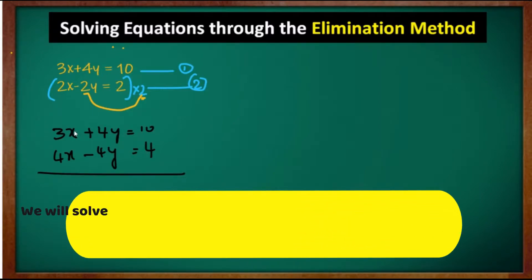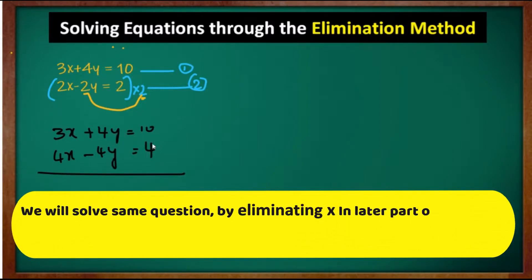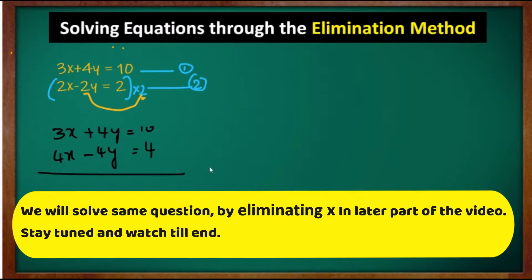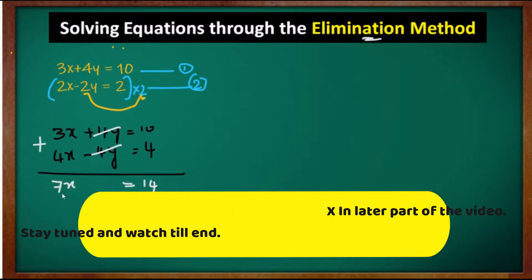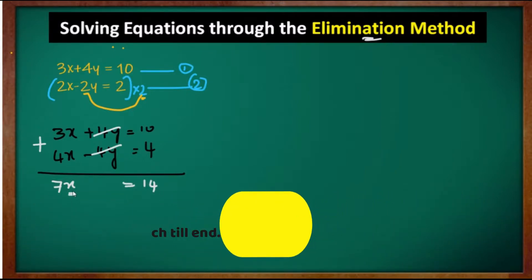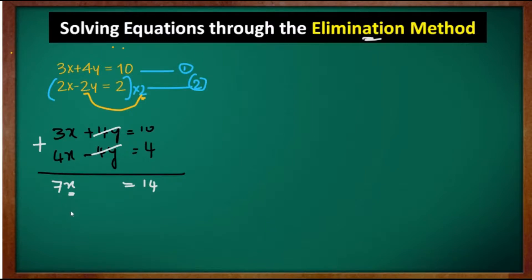Arrange both equations so that x coefficients, y coefficients, and numbers are one below the other. Now add both equations: +4y and -4y get eliminated. This is why the method is called the elimination method. Adding: 3x + 4x = 7x, and 10 + 4 = 14, giving 7x = 14.